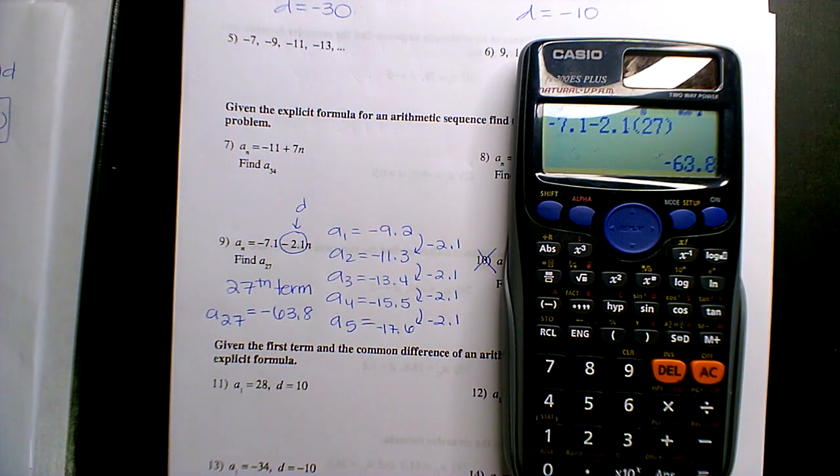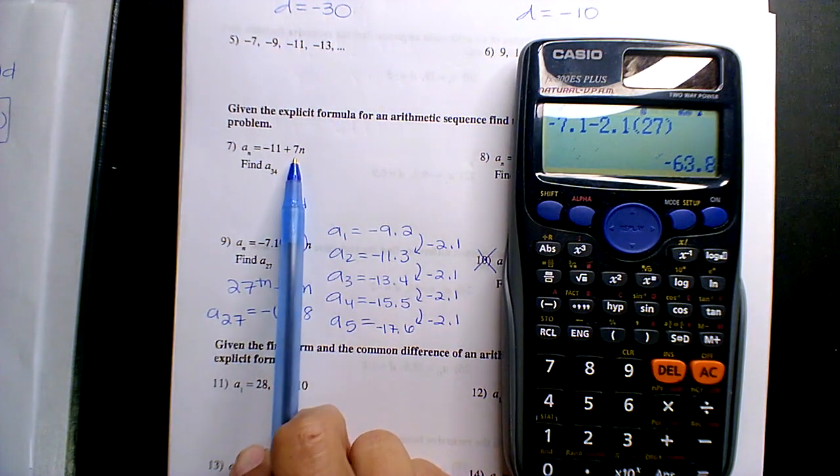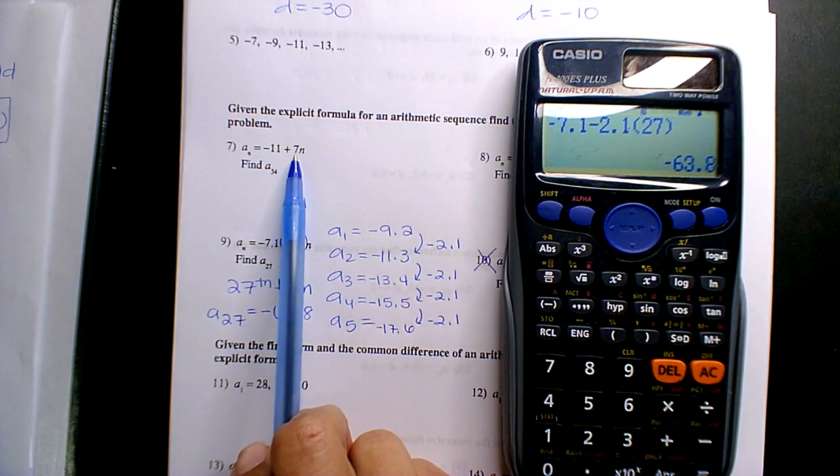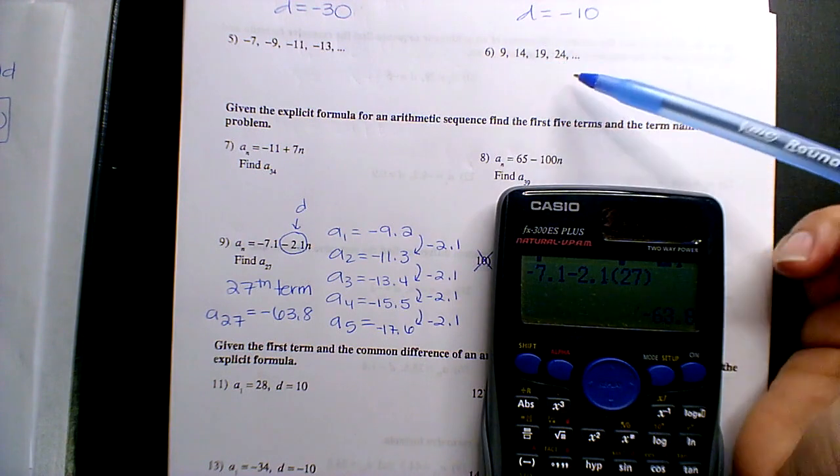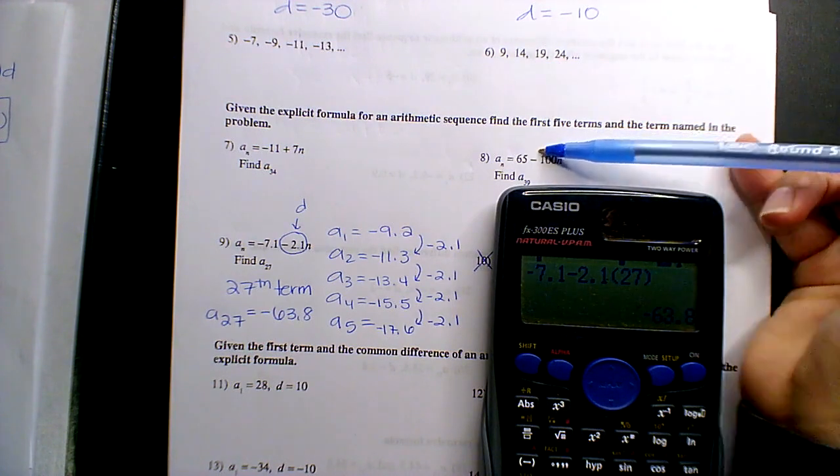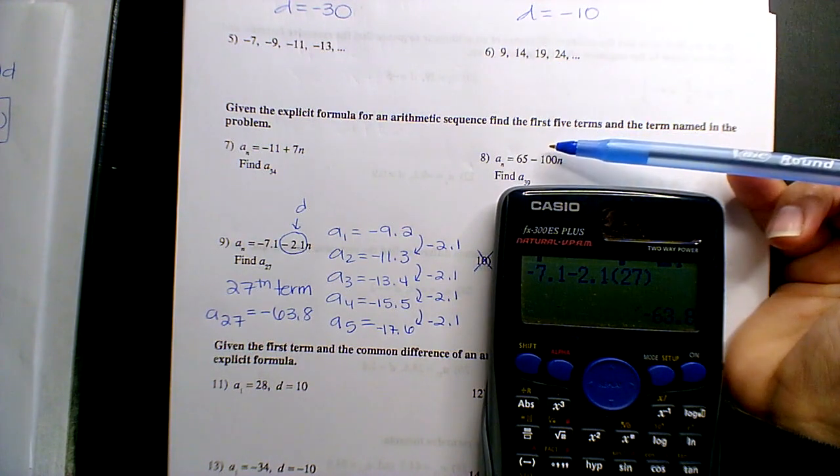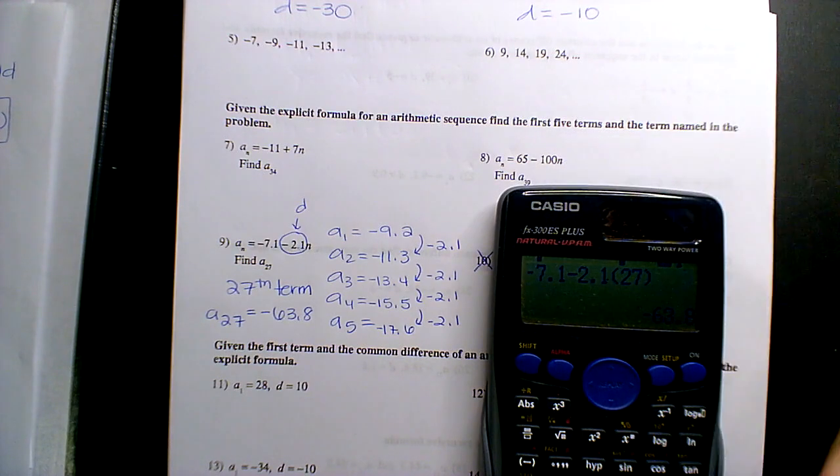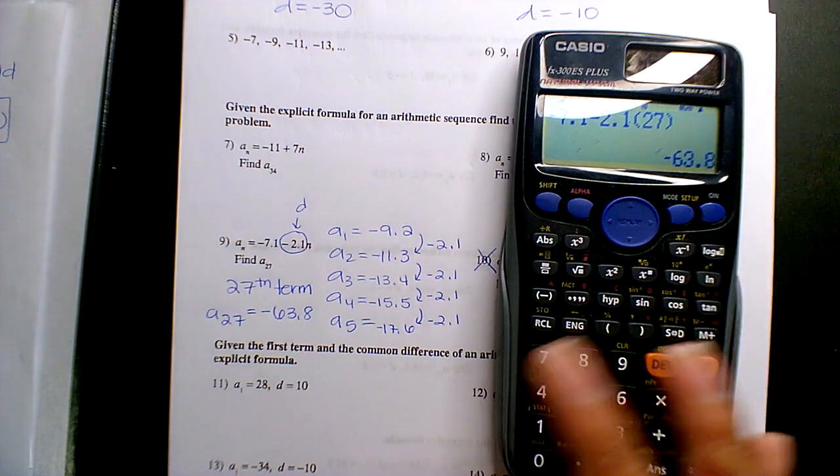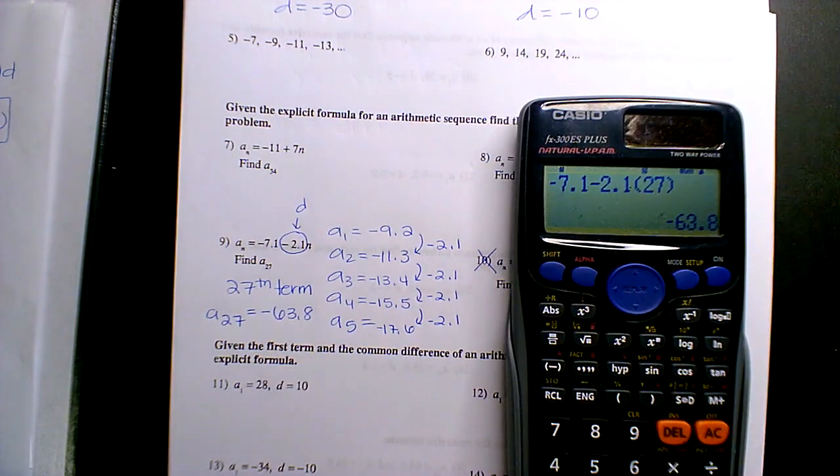So you're welcome to use a calculator. However, once you know what the D is, positive 7 is a common difference. You're rising by 7 from term to term as you progress. Here, it's negative 100. That's super easy. You guys are good with 10s and 100s and 50s. So you're going down by 100 and then, of course, get the calculator ready for the large term.